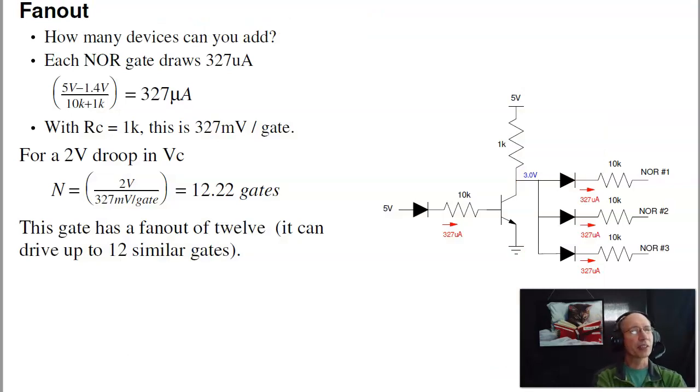You can also calculate the fan out. From the previous circuit, if I want to drive another circuit, each circuit is going to draw 327 microamps, that current has to come from somewhere. That comes through the 1K resistor. 327 microamps at 1K means each one I connect drops its voltage by 0.3 volts. If I'm only allowed to have a 2 volt droop on the output, then I can drive up to 12 gates. That's so you get fan out. Back in 275, there's only so many gates you can connect. That's part of the reason. Too many gates draws too much current. Too much current drops the voltage.